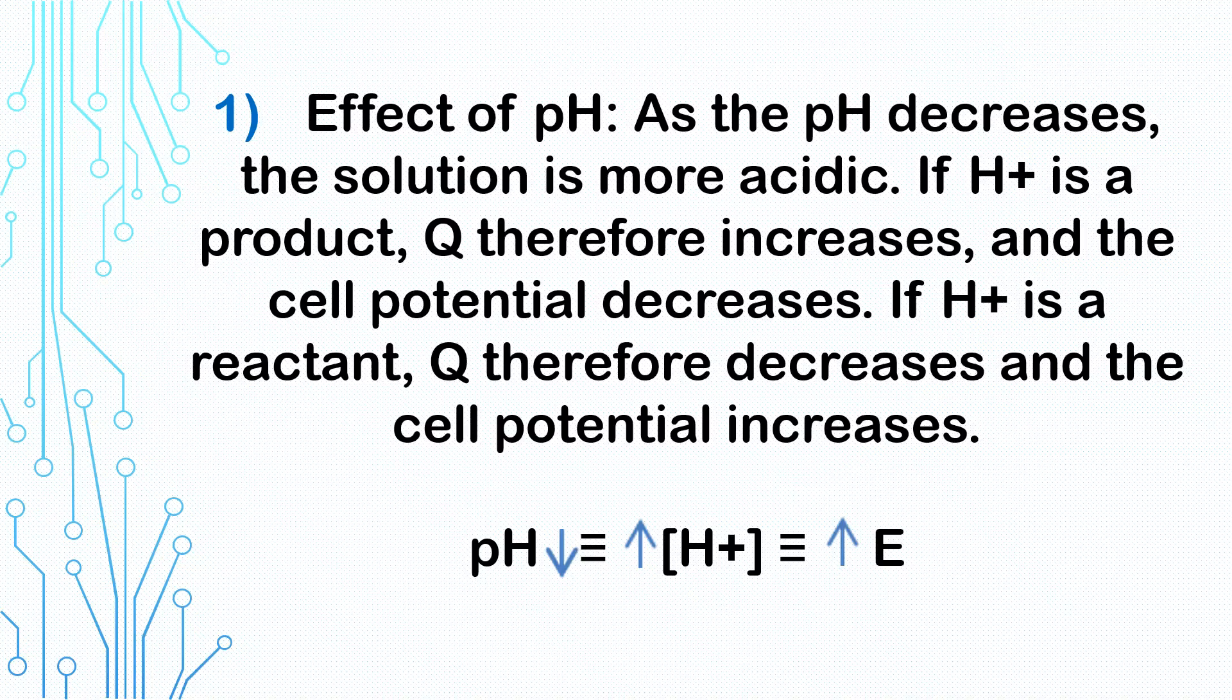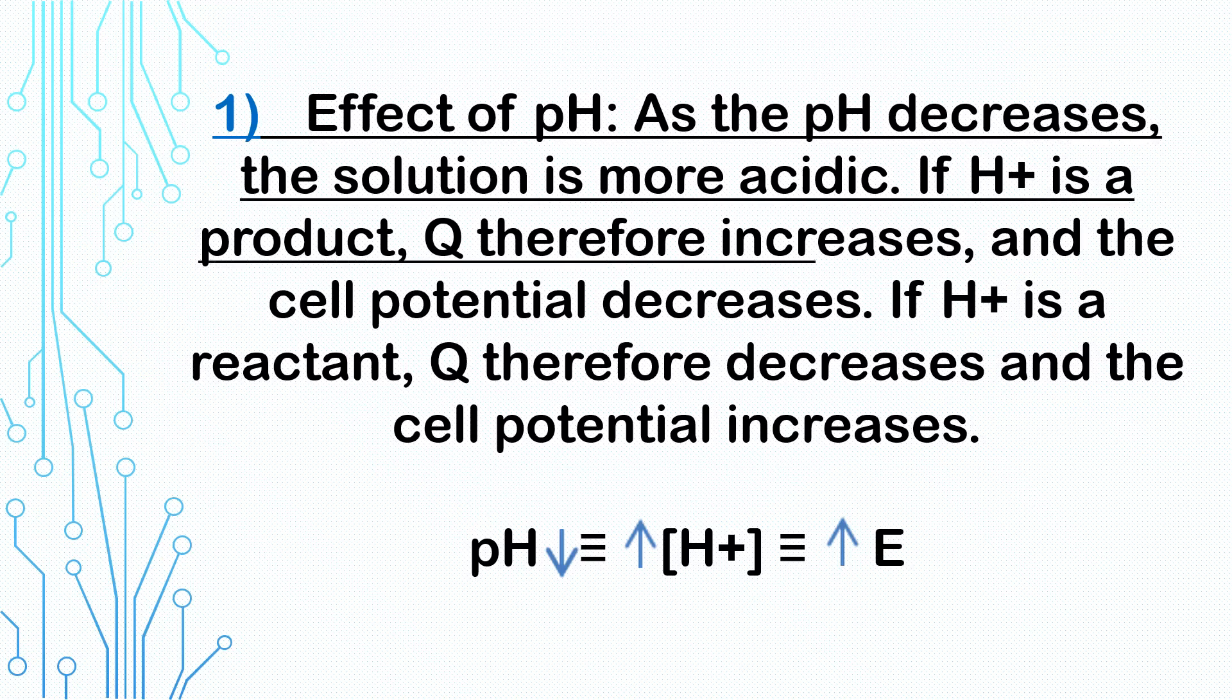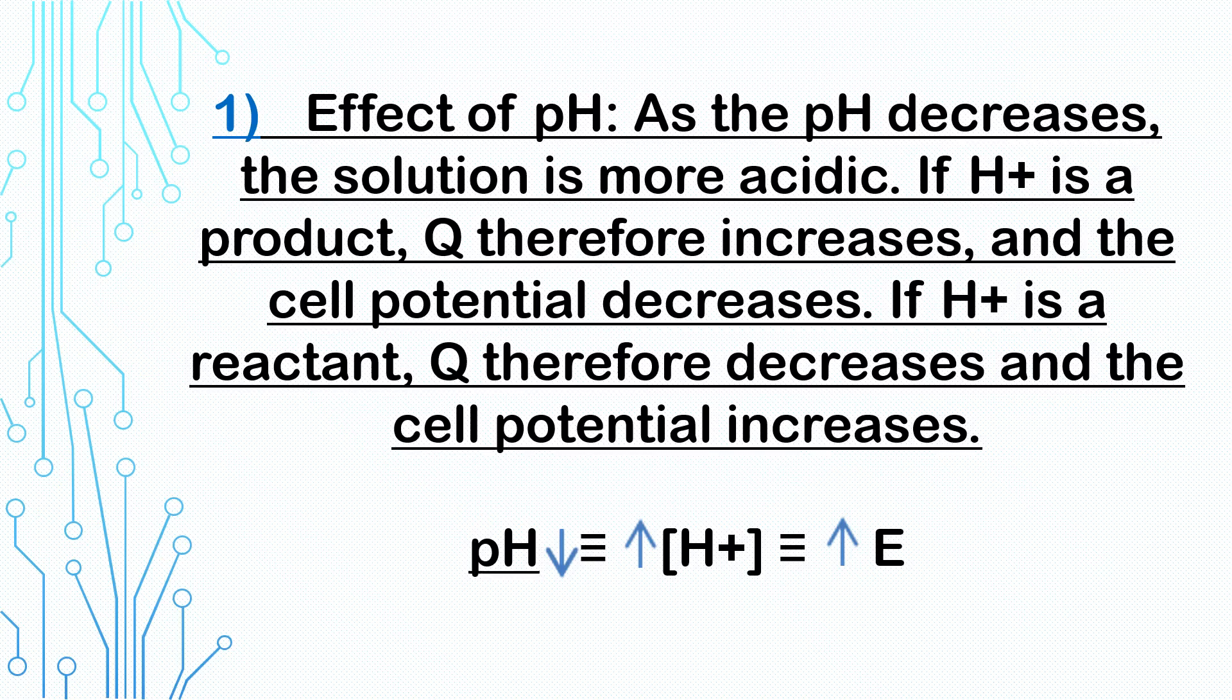The reduction potential must contain oxygen to be affected by the pH, which is the first factor we have affecting Nernst's equation. Increasing the acidity of the medium by increasing the concentration of the protons leads to increasing the electric potential and decreasing the pH, and vice versa.